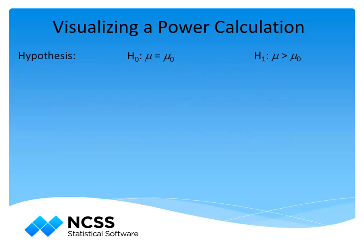We begin with the null and alternative hypotheses. If the null hypothesis is true, the distribution of values looks like this. If the alternative hypothesis is true, the distribution of values depends on the true mean.